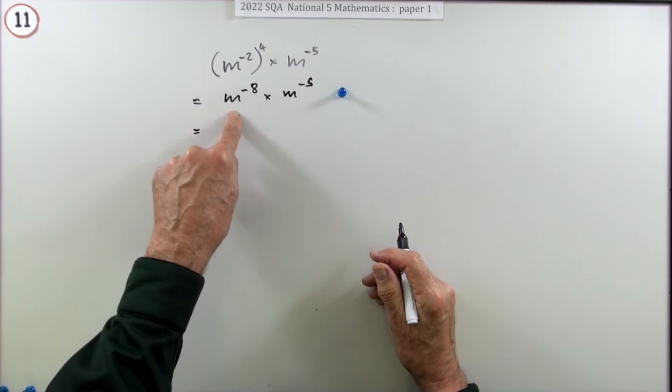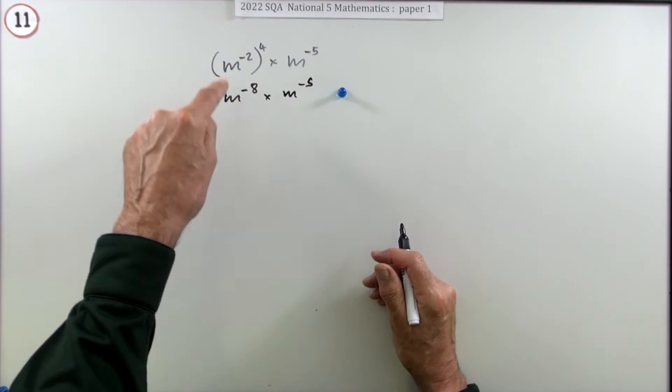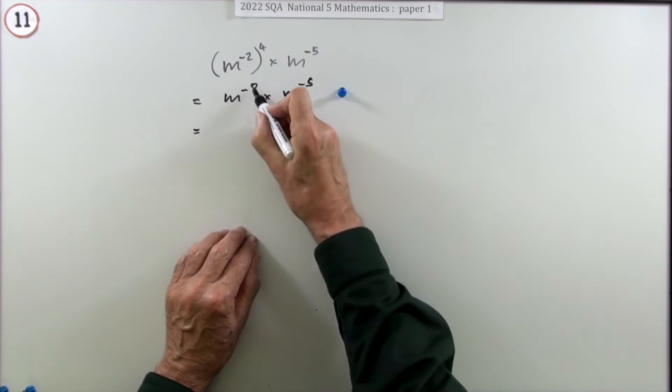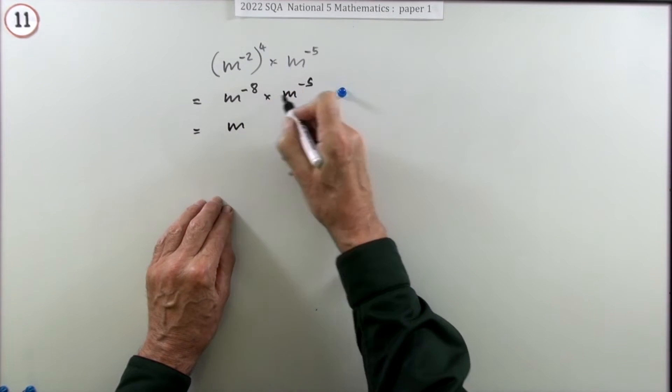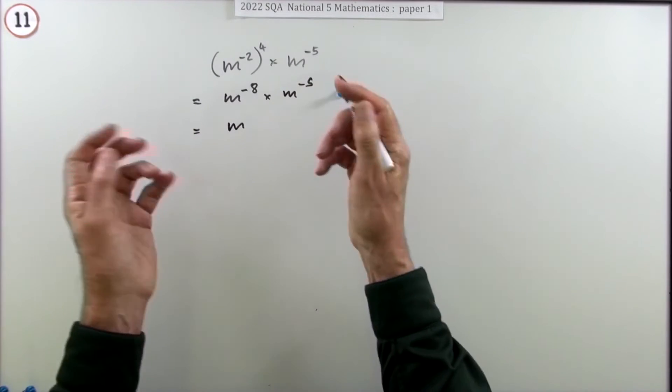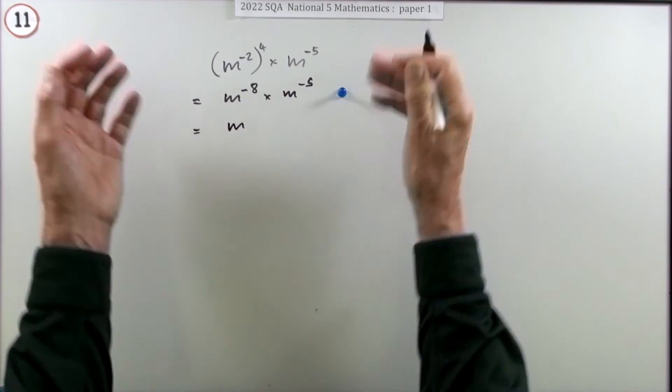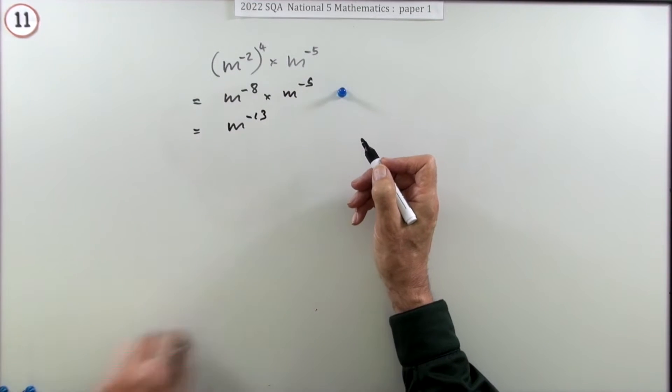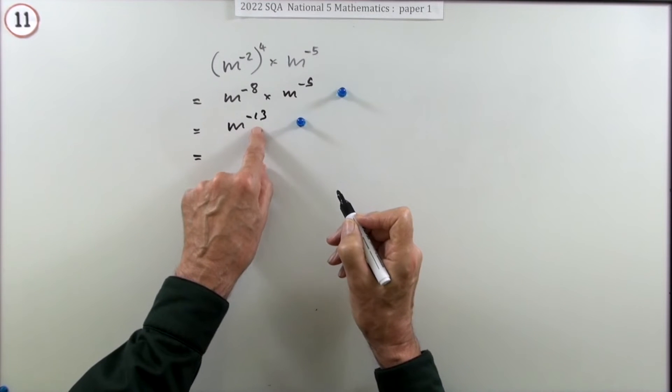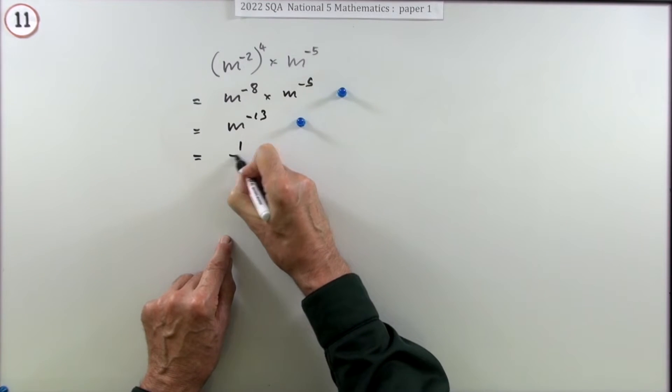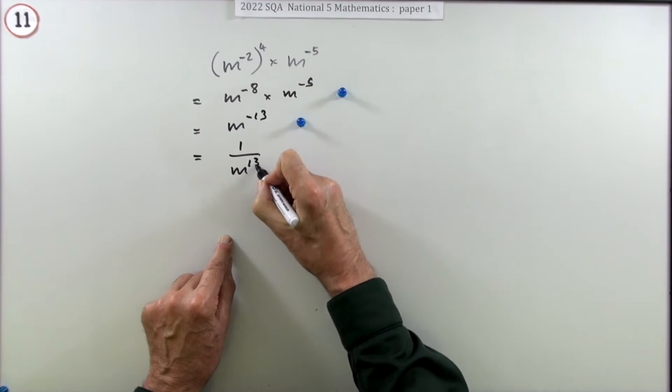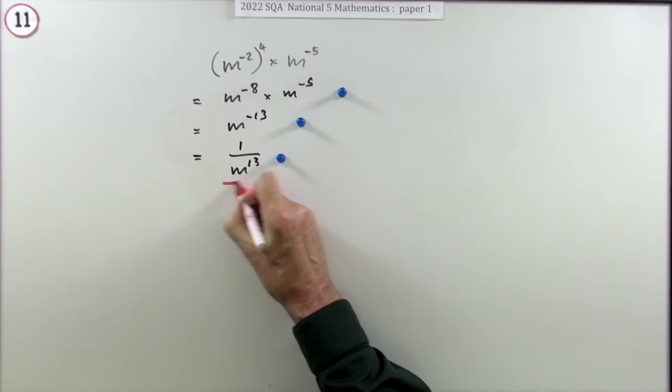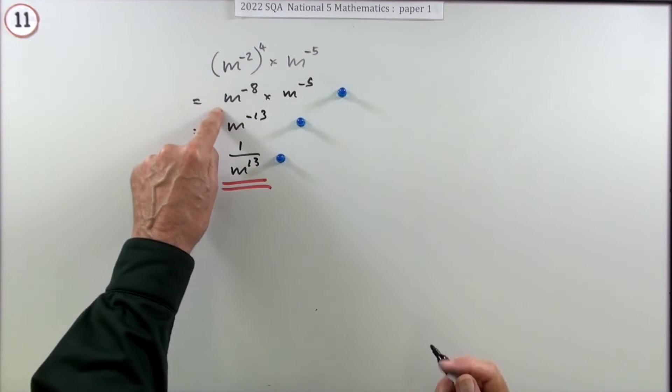Then what happens if you carry out a series of multiplications and then carry on doing more multiplications? Well you'll have done the sum of the multiplications, so you add these two together. If you're multiplying terms you add the powers. You add up how many times you've multiplied altogether, or in this case how many times you've divided altogether. So about negative 13, negative 8 plus negative 5 is negative 13. Now you can say well that's not a positive power. What does that negative mean? It means one over, it means reciprocal, it means instead of multiplying you're actually dividing. Now you get the final mark.